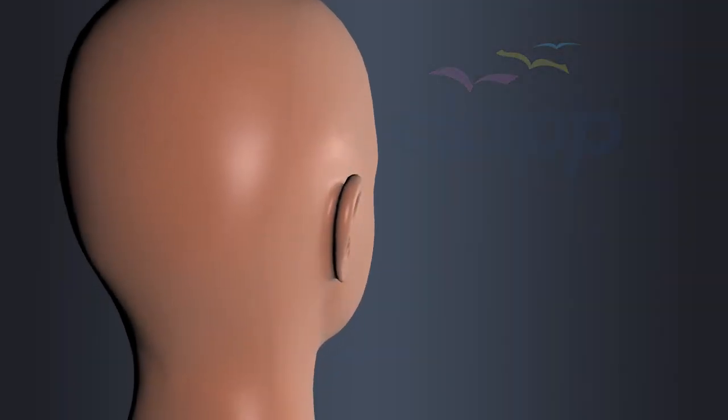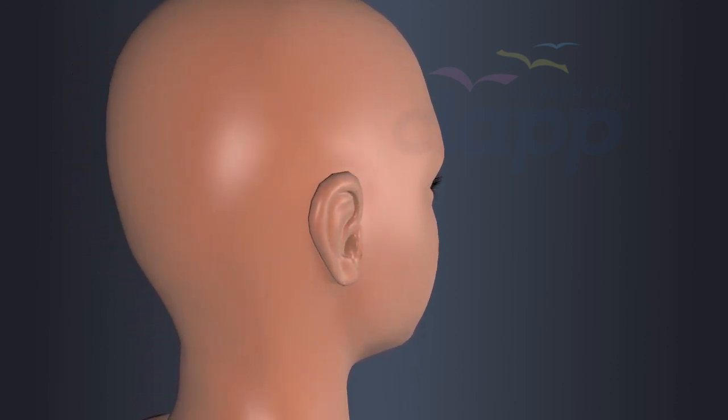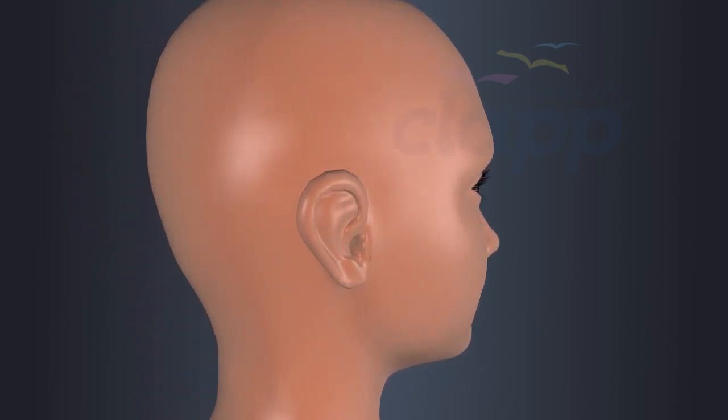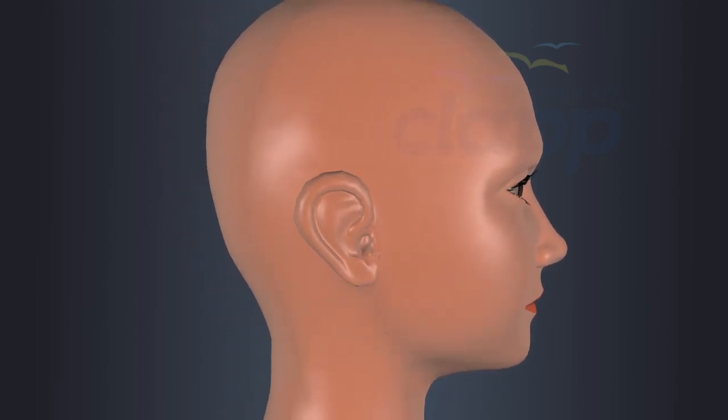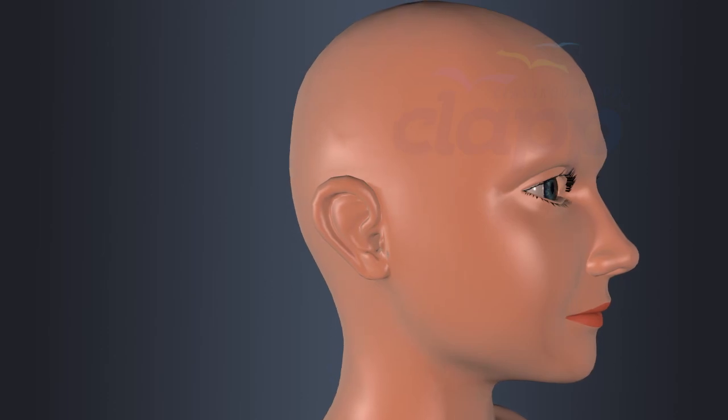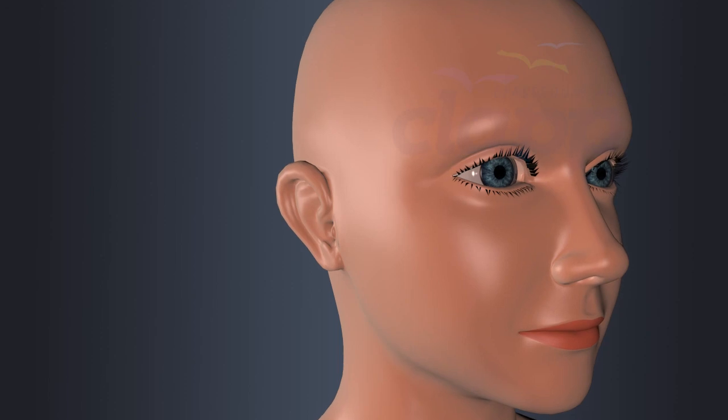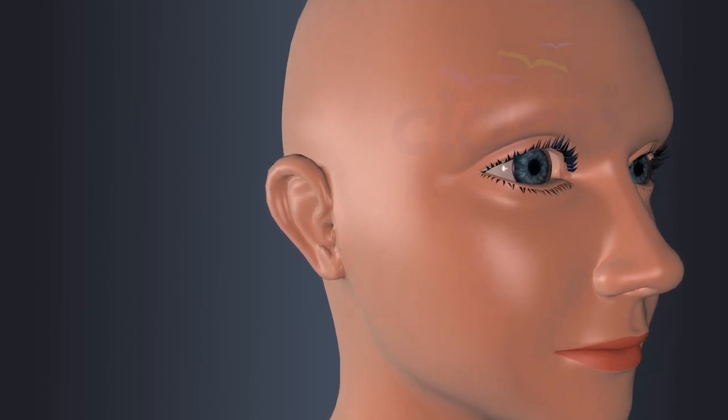Pinna is also known as auricle. It is the visible, fleshy and cartilaginous part of the ear located on the lateral side of the head. It has a unique shape that helps in capturing sound waves from different directions and funneling them into the auditory canal.